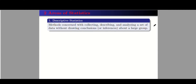Now we have two areas of statistics. First is descriptive statistics. By the word itself, it will just give us a short description of your data. It is also the methods concerned with collecting, describing, and analyzing a set of data without drawing conclusions or inferences about a large group. You just have to make an interpretation based on your data collected — collect the data, organize it, describe it, and then make some interpretations.